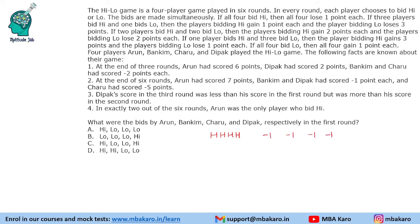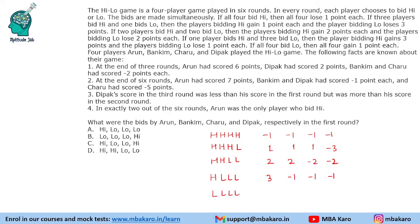If three players bid high and one bids low, the three bidding high gain one point each and the player bidding low loses three points. If two bid high and two bid low, the high bidders gain two points each and low bidders lose two points. If one bids high and three bid low, the high bidder gains three points and the others lose one point each. If all players bid low, all gain one point each. These are the five possible scenarios.